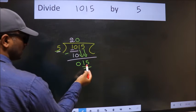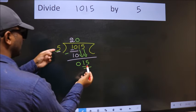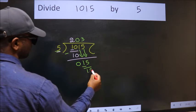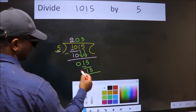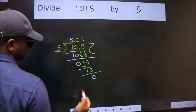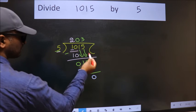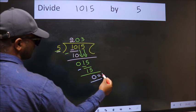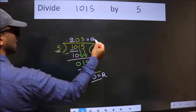So, 15. When do we get 15? In 5 table, 5 times 3 is 15. Now, we subtract. We get 0. No more numbers to bring it down. So, we stop here. This is our remainder and this is our quotient.